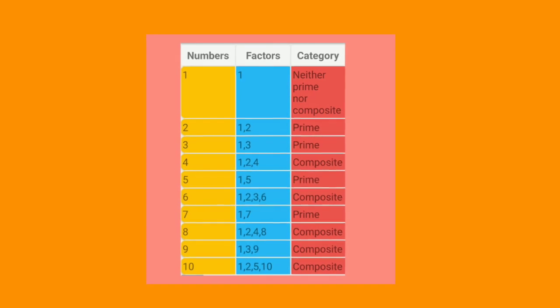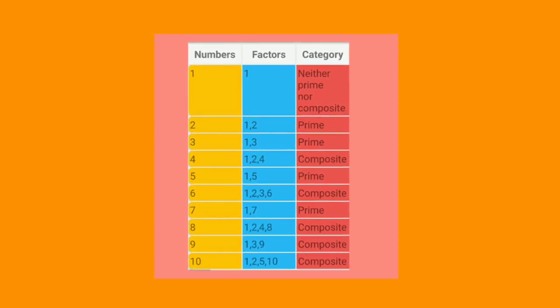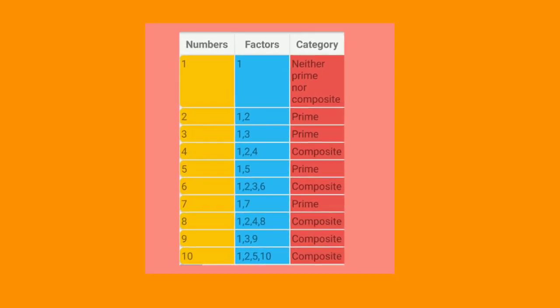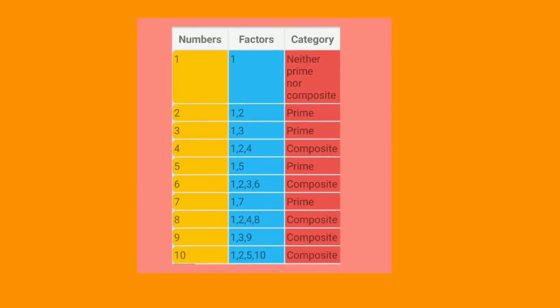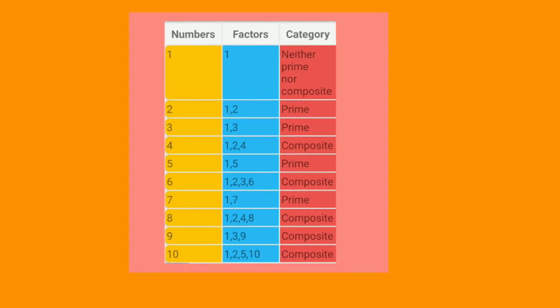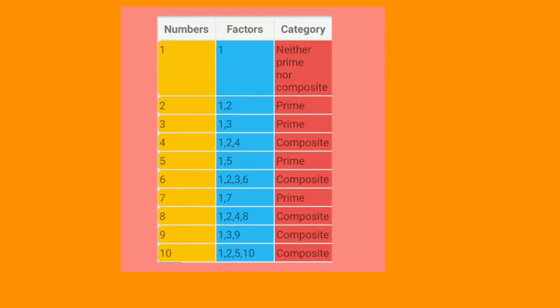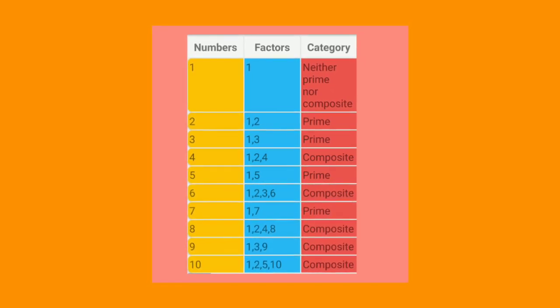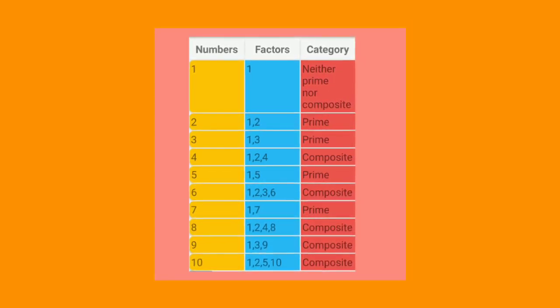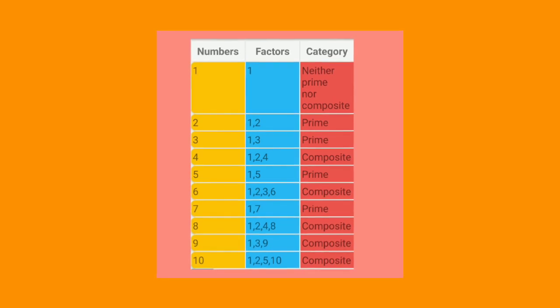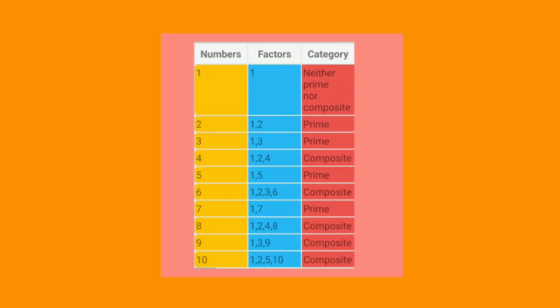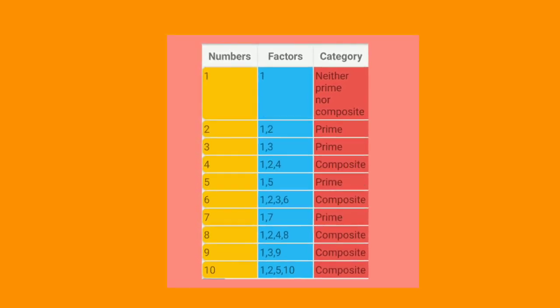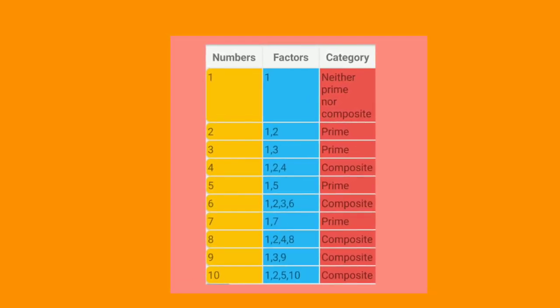According to the definition of prime numbers and composite numbers, 1 has neither exactly two factors nor more than two factors, so 1 is neither prime nor composite number. Here the numbers 2, 3, 5, 7 have exactly two factors, that's why the numbers are prime numbers. The numbers 4, 6, 8, 9, and 10 have more than two factors, so these numbers are composite numbers.